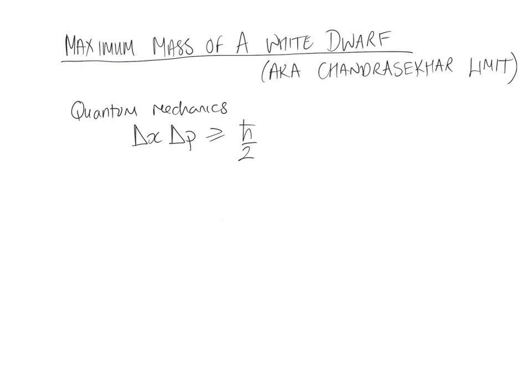To understand degeneracy pressure, we're going to ignore relativity and say that momentum is the mass of the electron times the velocity of the electron. The degeneracy velocity is the velocity electrons must have if they're squeezed into a tiny space. The pressure is caused by that velocity of those electrons — kind of hand-wavy, but that's the approach.